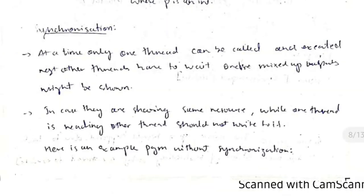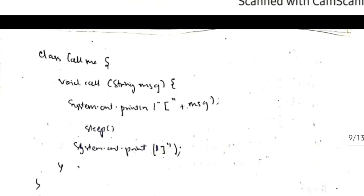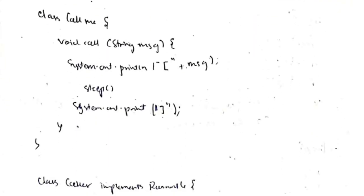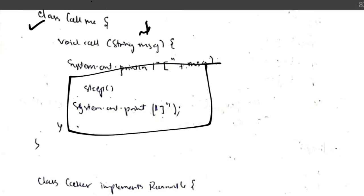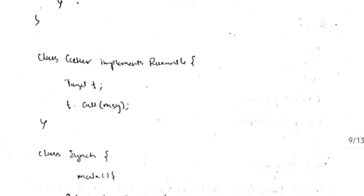Synchronization means only one thread should perform a task at a time, otherwise errors can occur. Consider an example with class CallMe, which prints a message between square brackets — if you pass 'hello', it prints '[hello]'. Without synchronization, interleaving of thread output occurs.